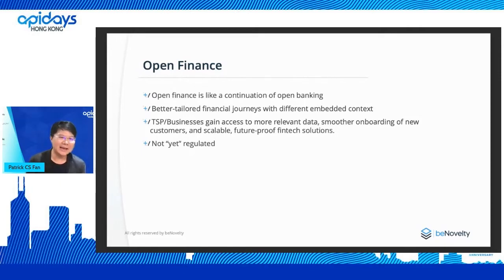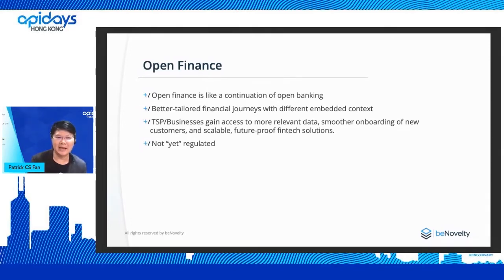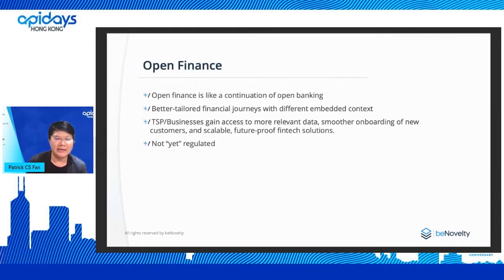We would describe open finance as the continuity of open banking — the next step. It's not just a technical next step; in the past three years, open banking allowed a lot of awareness and cultural education, with people starting to shift their thinking. So open finance is an evolution from different perspectives — not only technical but also mindset. What it focuses on is the actual financial journey with different embedded contexts. In Chinese, we heard this described as embedding specific context at the right time and the right moment. With those open finance collaborations, TSPs or businesses can help access relevant data to provide a better, more scalable, more contextual service for the consumer.